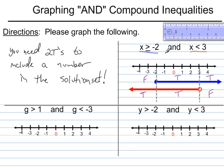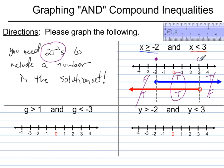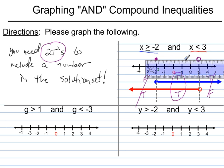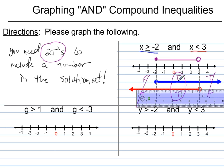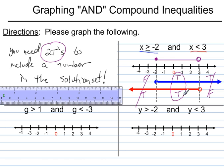Following our rule for AND, where we need two trues: in the left region there's one true and one false — not good. In the middle there are two trues. In the right there's one true and one false. So the final answer is just the middle section. I'll move that part up to the number line — a solid dot at negative 2 and an open dot at 3, connected with a line. The final answer is the numbers between negative 2 and 3, including negative 2, because that's where we found two trues.